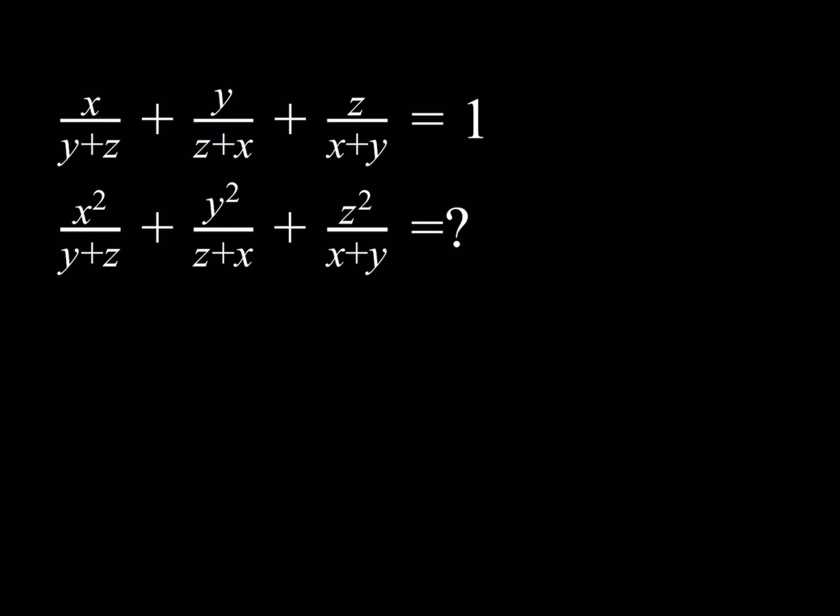Normally, this is like a proof problem where they tell you the answer and say show that this equals that. I removed the answer, and we're just going to evaluate it — it's pretty much the same thing. One approach is to plug in numbers that satisfy the first equation, since the expression we're looking for is constant. But instead, I'd like to manipulate this algebraically.